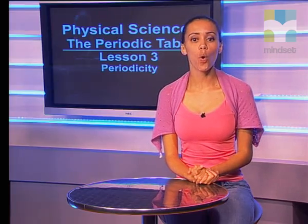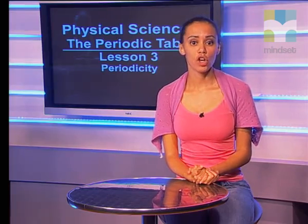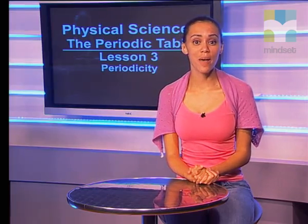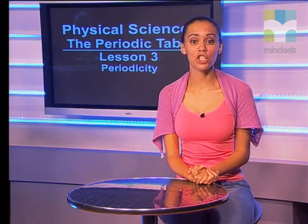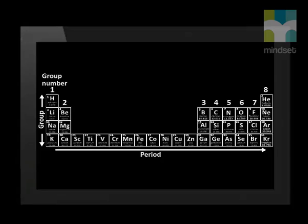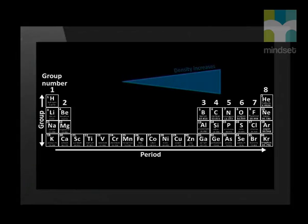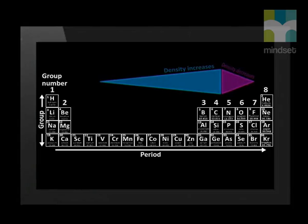The last four elements in period 2 are all gases, so one would expect their densities to be low. So in summary, the density of the metals increases across a period, while the density of the non-metals decreases across a period.